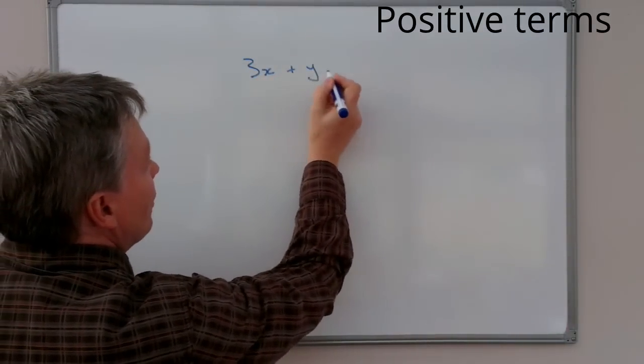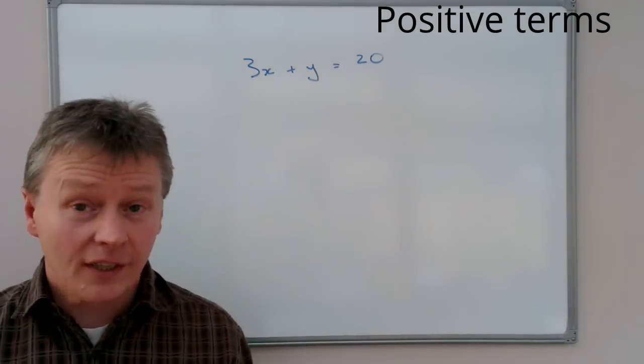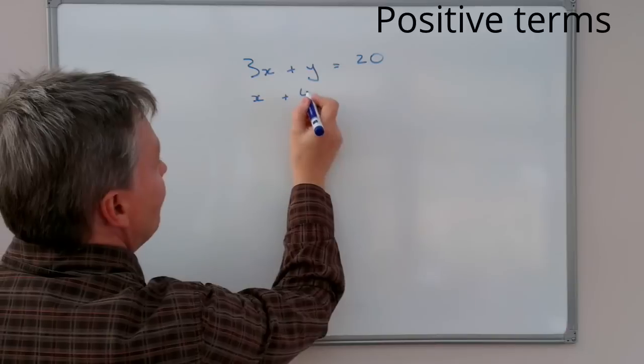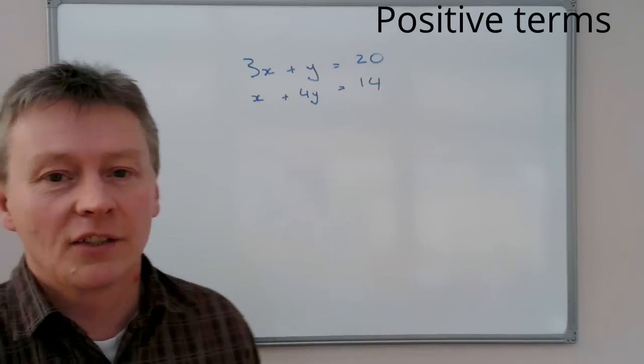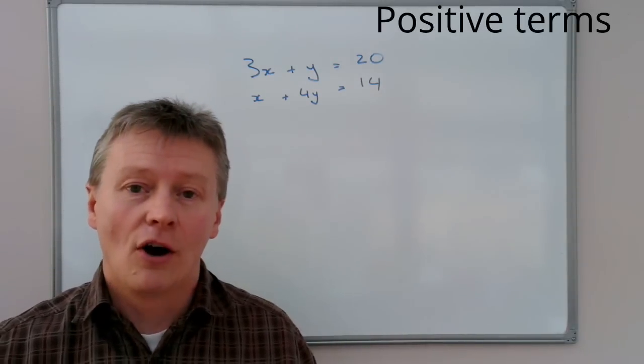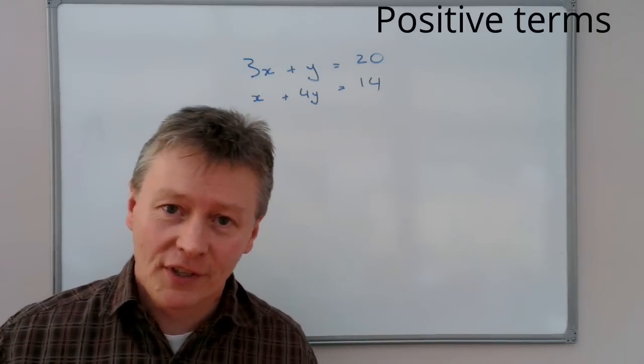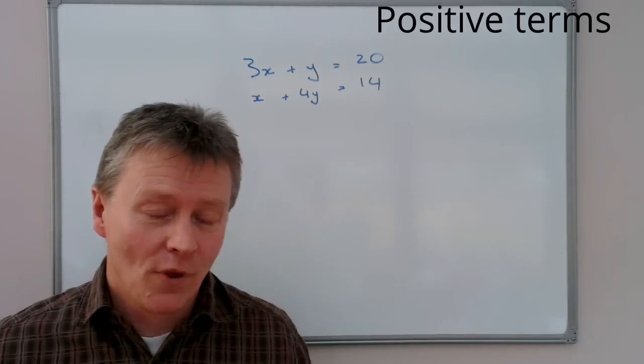We've got 3x plus y equals 20. And then the second equation we've got is x plus 4y equals 14. And what they're asking us to do is to find out the value of x and y so that both of these equations can be satisfied at the same time.